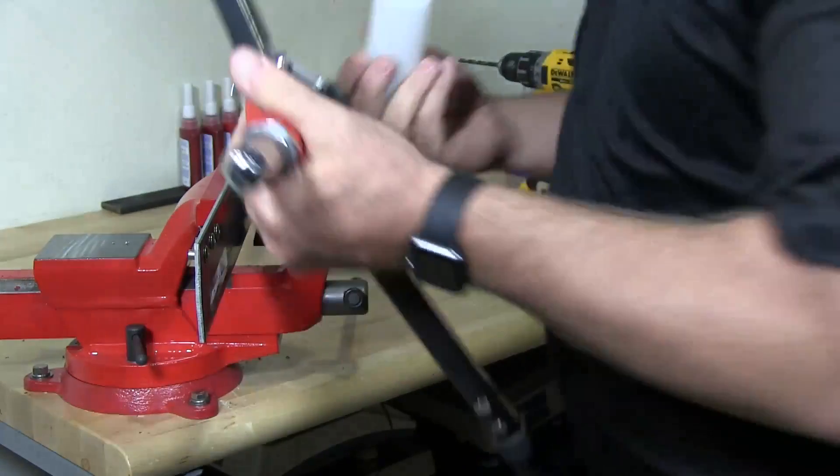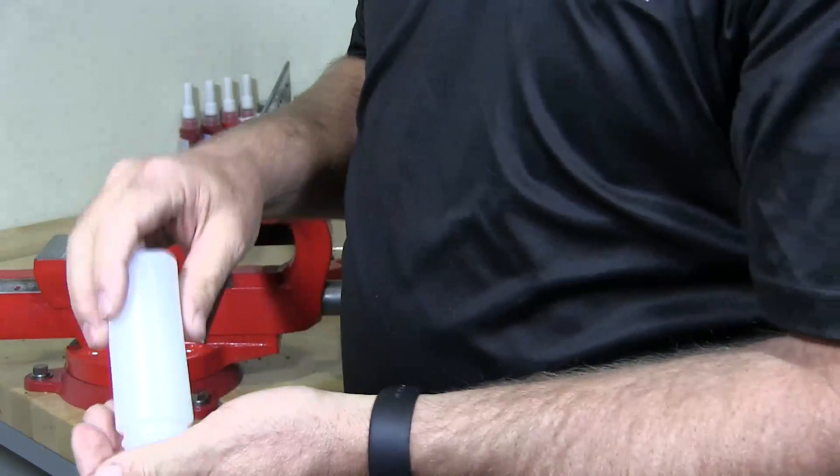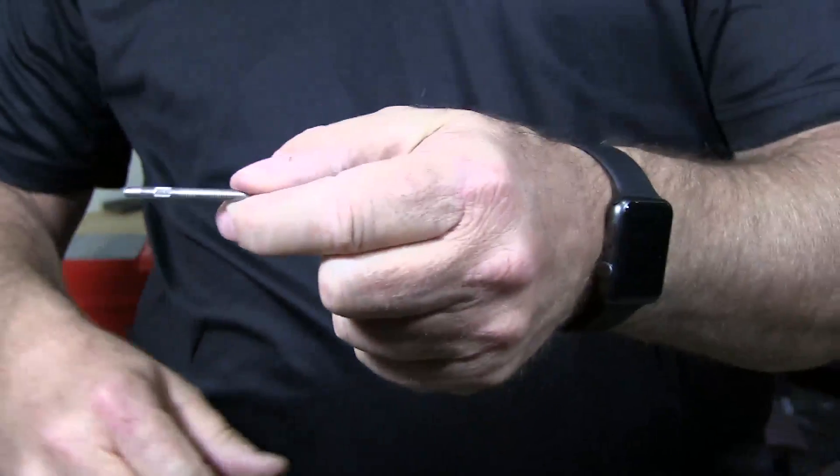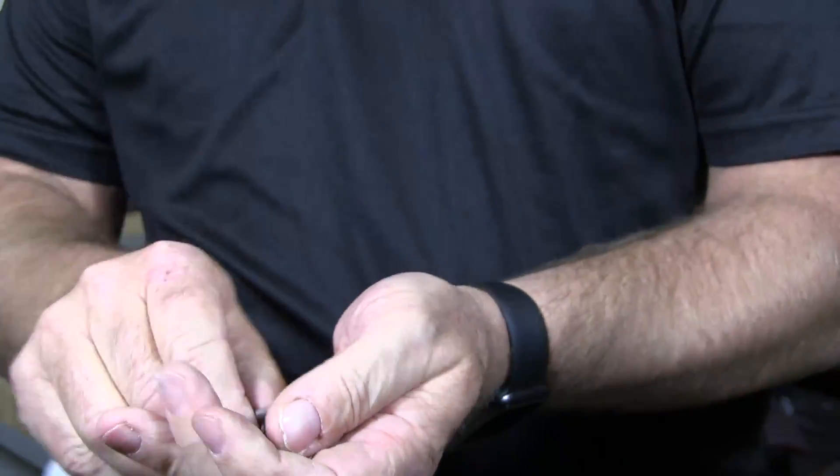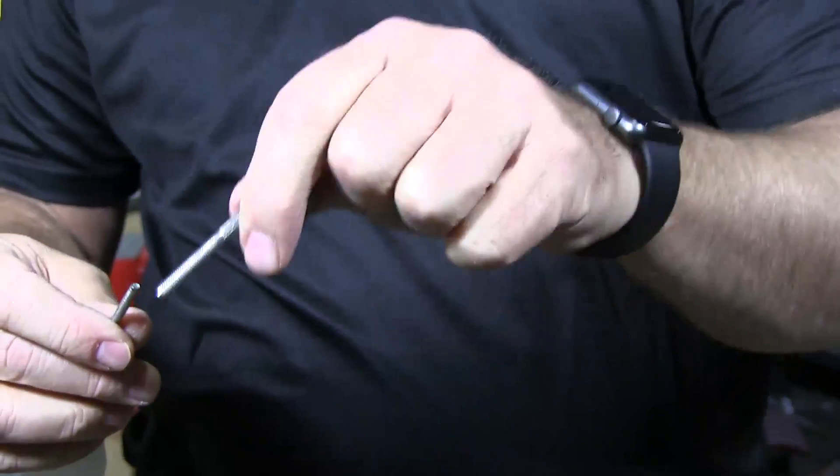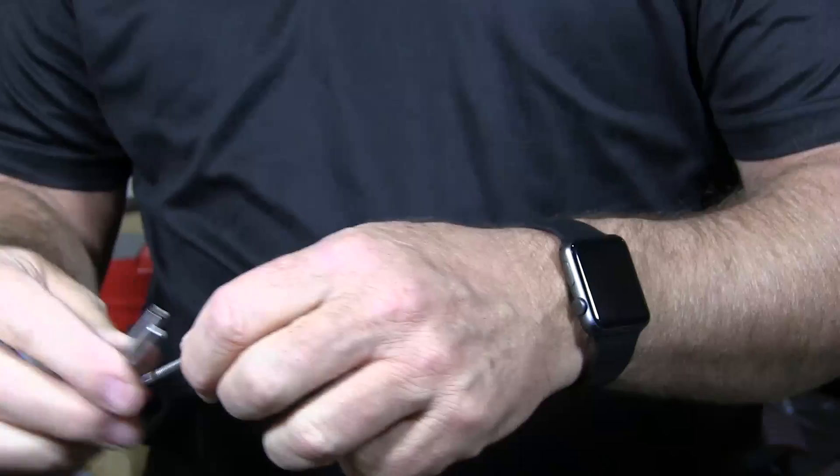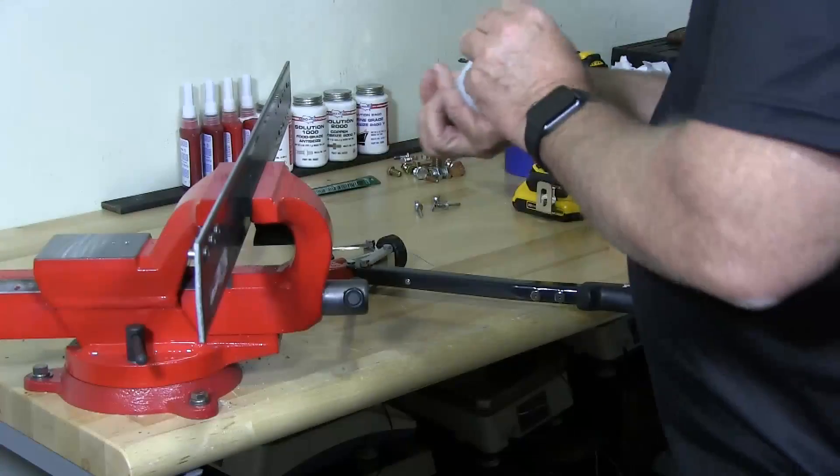And then I unscrewed the cup. And these are the mandrels that have been cut off after the crimping process. Those are the three that I just did.